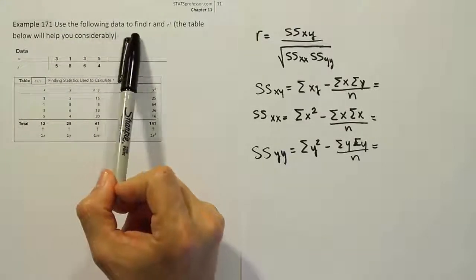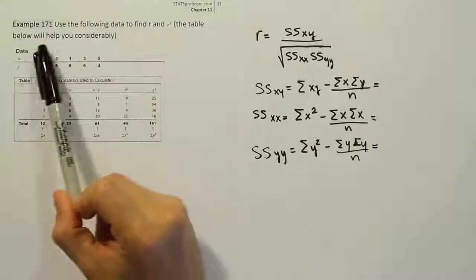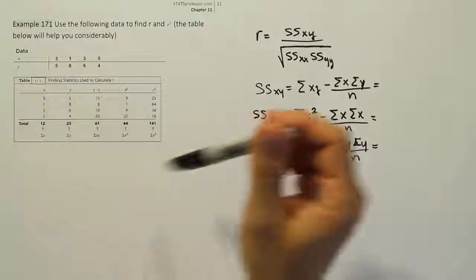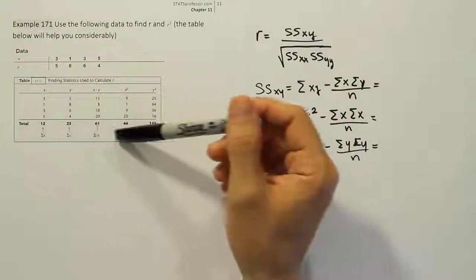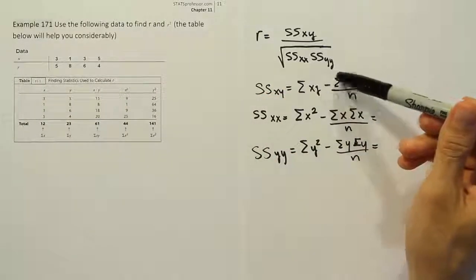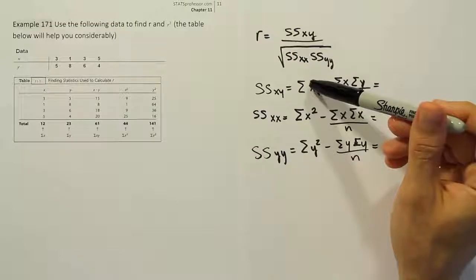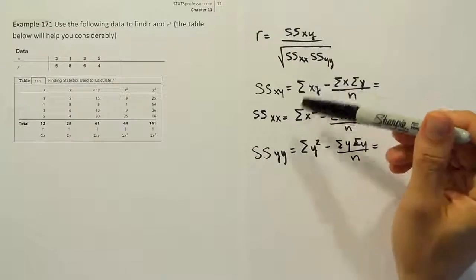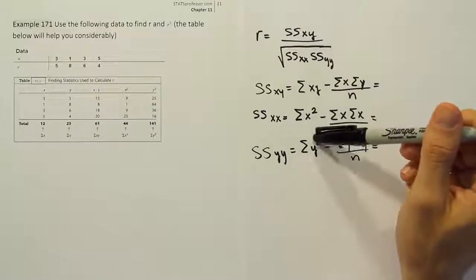Example 171. Use the following data to find r and r squared. The table below will help you considerably. What the table is giving us—it might be hard to see because it's a tiny table—is the sum of x, the sum of y, the sum of the product of x and y, the sum of x squared, and the sum of y squared.